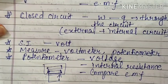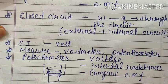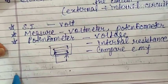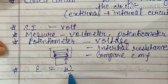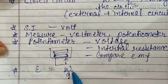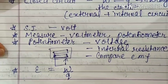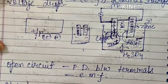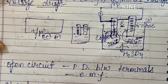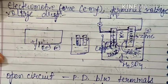The formula for EMF: it is denoted by epsilon and equals the work done per unit charge in bringing a unit test charge throughout the complete circuit — outside as well as inside. Terminal voltage and voltage drop (also known as lost voltage) will be covered in the next video.